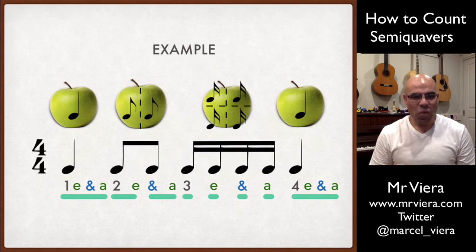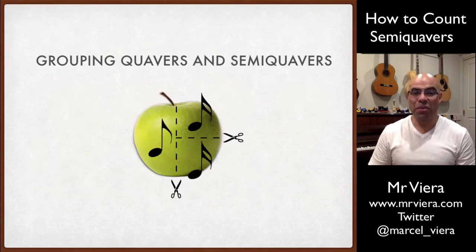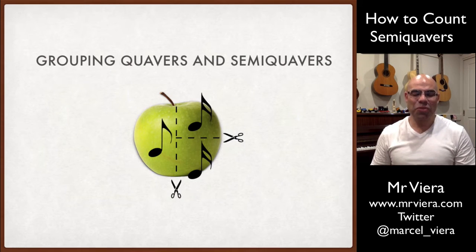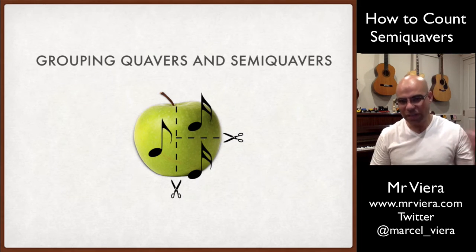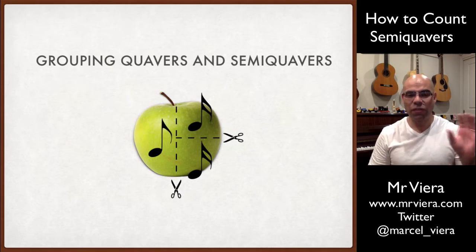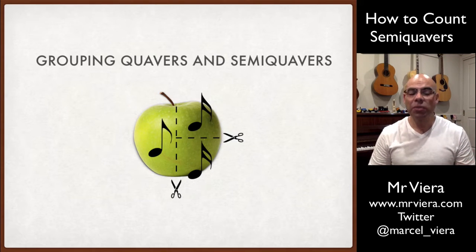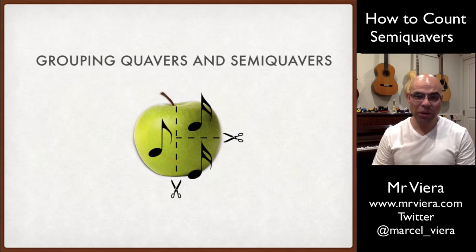What happens when you get different pieces of the apple and you try to group them together? We've got a beat — we've sliced it down the middle, so we've got half on the left-hand side, a full quaver, half an apple. But then we've grabbed the other half and sliced it, so now we've got two quarters or two semiquavers.